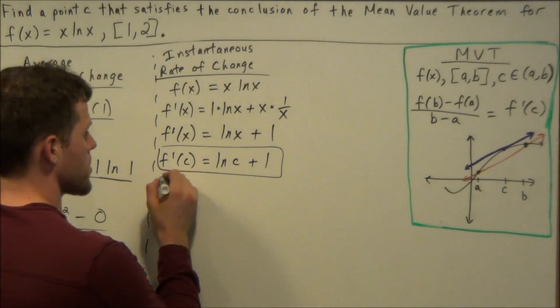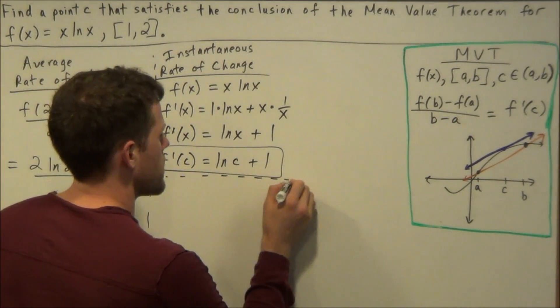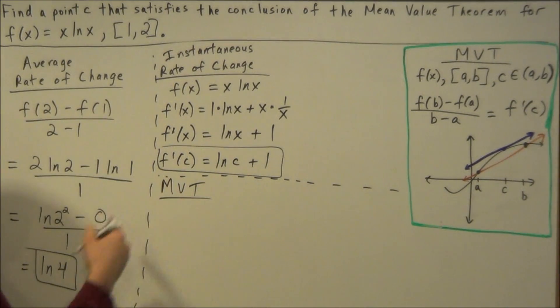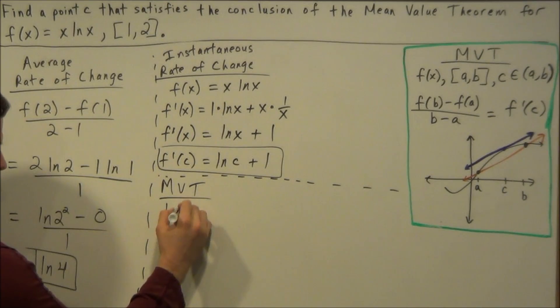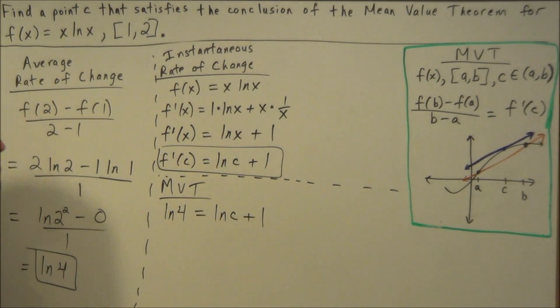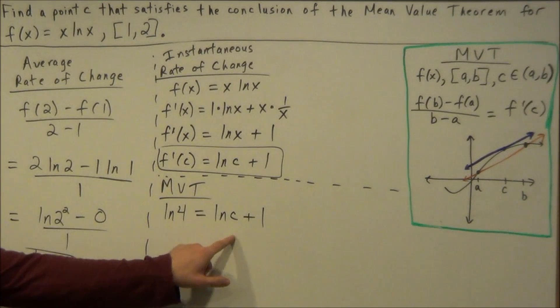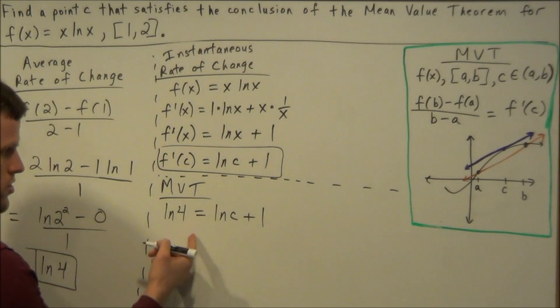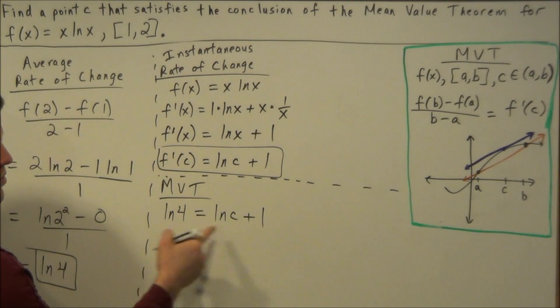So this is where the theorem comes in. So to apply the conclusion of the mean value theorem, now we set up the equation natural log 4 equals natural log c plus 1. Now there's a few ways we could solve for c.